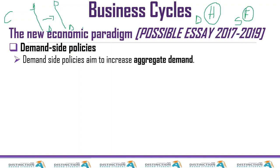On the other hand, we have the supply curve — businesses are responsible for that. The demand curve is downward sloping; the supply curve is upward sloping. An increase in supply is a shift of the supply curve to the right, to S1. Any policy that stimulates aggregate demand is a demand side policy; a policy that makes businesses manufacture more is a supply side policy.